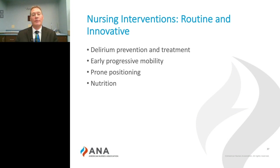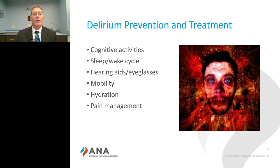Delirium first. The first thing you want to do is assess for delirium on a shift-to-shift basis. If you're not currently assessing delirium in your med-surge units as well as your critical care units, you may be missing this disease. It's important to early identify the disease so you can intervene quickly and give patients the treatment they need.